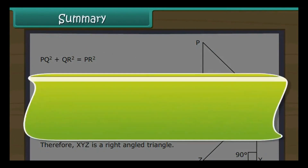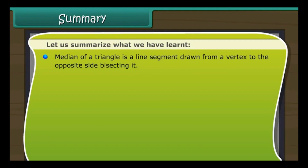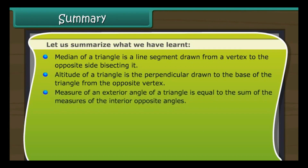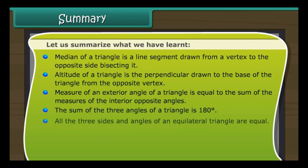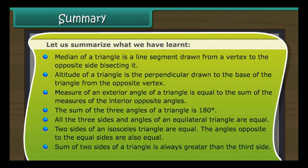Summary: A median is a line segment from a vertex to the opposite side, bisecting it. An altitude is the perpendicular from a vertex to the base. An exterior angle equals the sum of the interior opposite angles. The sum of a triangle's three angles is 180 degrees. All sides and angles of an equilateral triangle are equal. Two sides of an isosceles triangle are equal, and the angles opposite those sides are equal. The sum of any two sides is always greater than the third side. The sum of squares of the two legs of a right-angled triangle equals the square of the hypotenuse.